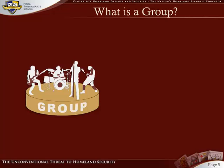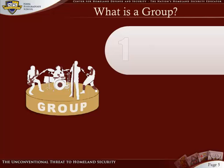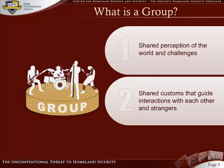Let's begin with the basics by defining what we mean by group. For our purposes, a group is any given body of people who consider themselves so. We can make a few assumptions about groups and the individuals operating within them. Within every group bound together by a shared culture operate certain sets of social mechanisms, roles, institutions, values, and symbols, all of which fundamentally condition its members' perception of the world and its challenges.